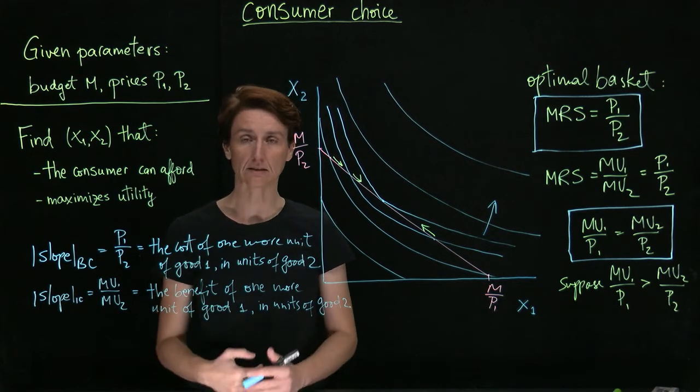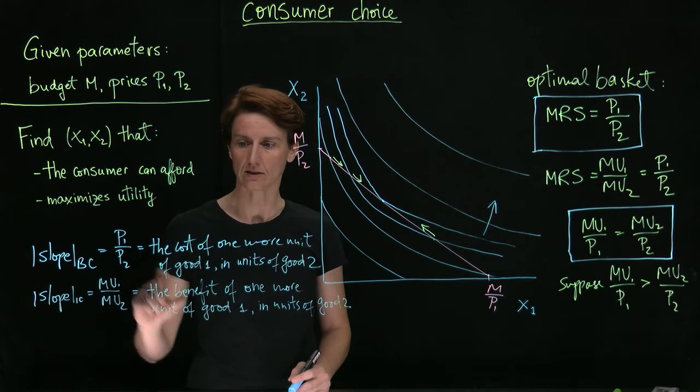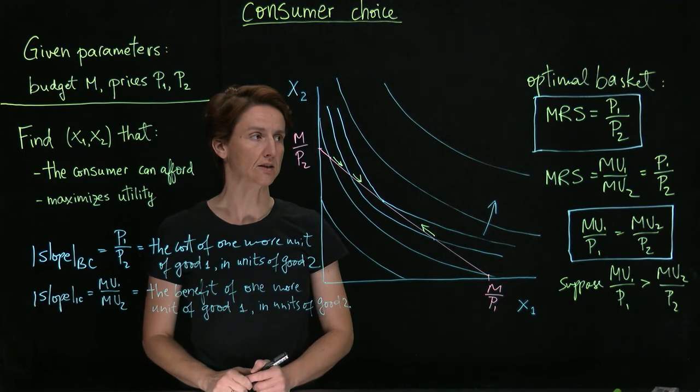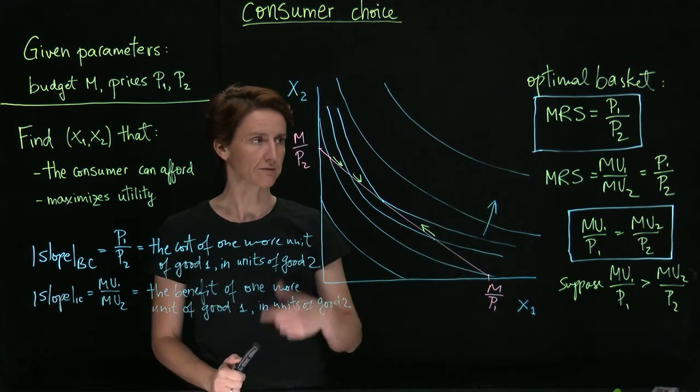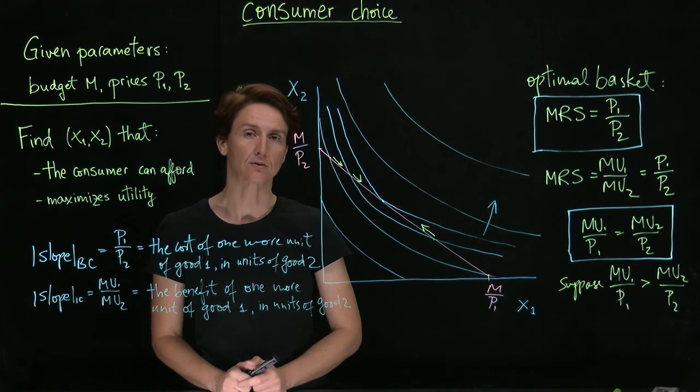The only time when we can't improve on utility by shifting in one way or the other is when these are equal to each other. So this will lead us directly to the tangency condition. So this is a final way of deriving what the optimal basket is for the consumer.